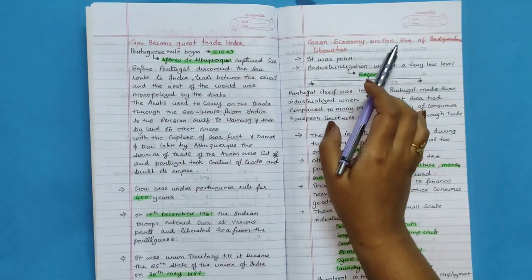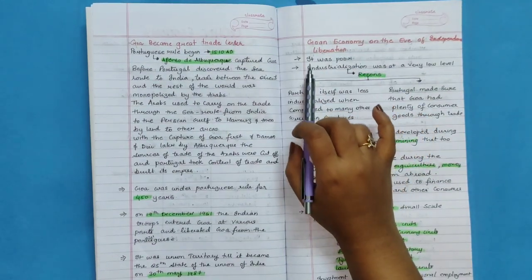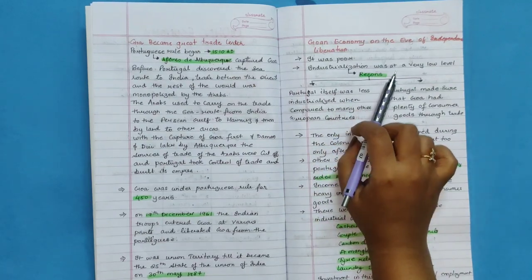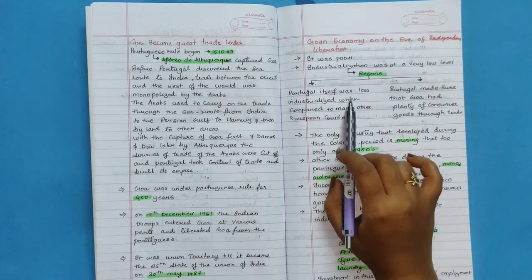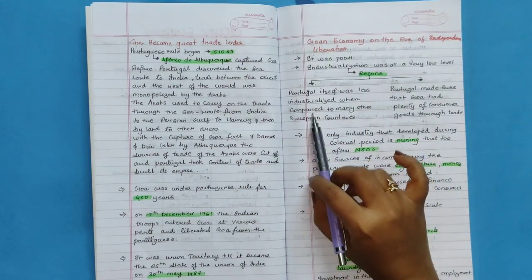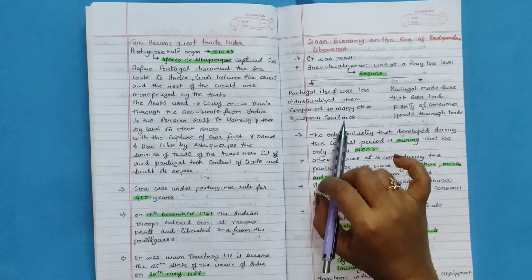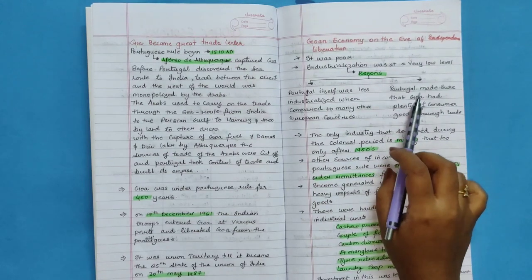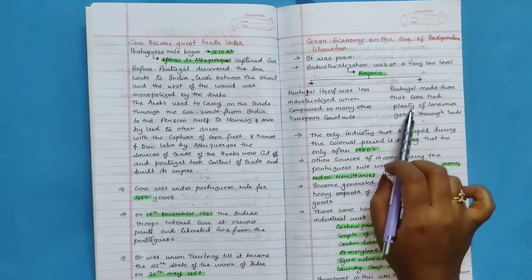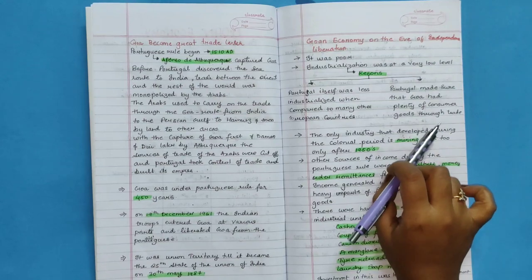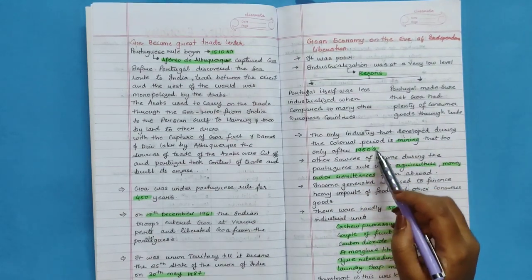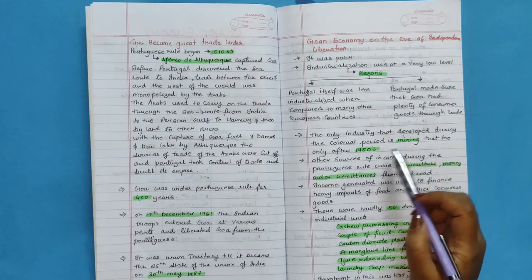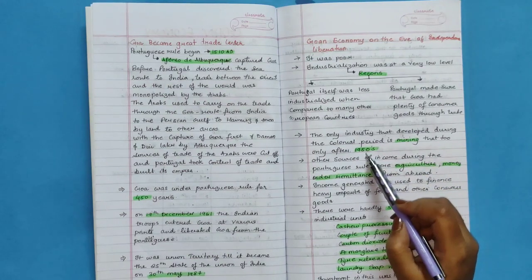Goan economy on the eve of liberation. It was poor. Industrialization was at very low level. The two main reasons: Portugal itself was less industrialized when compared to many other European countries. And second, Portugal made sure that Goa had plenty of consumer goods through trade. The only industry that developed during the colonial period is mining, that too only after 1950s.